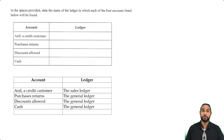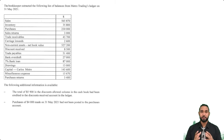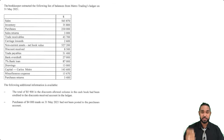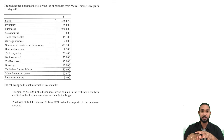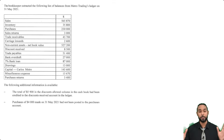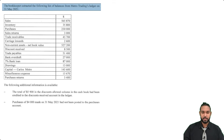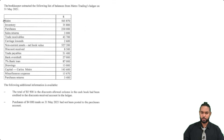Onto part C. They want us to take the information in this table and make a trial balance — they call it an adjusted trial balance, but I prefer to call it an amended trial balance, because an adjusted trial balance is done after adjustments such as accruals, prepayments, provision for bad debts, and provision for depreciation. The bookkeeper extracted the following list of balances from Metro Trading's ledger on 31st May 2021.